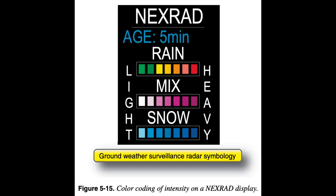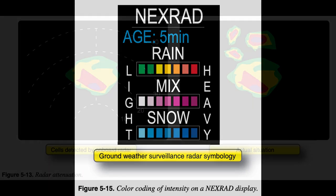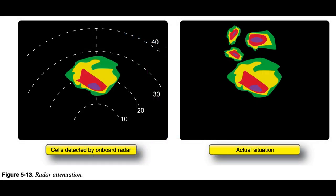The color-coding scheme used by one ground weather surveillance radar system, NEXRAD, is shown in Figure 5-15. Note that this color-coding scheme is slightly more sophisticated than that for the onboard system in Figure 5-13. It is capable of distinguishing rain, snow, and mixtures of the two.